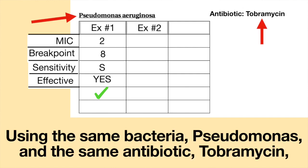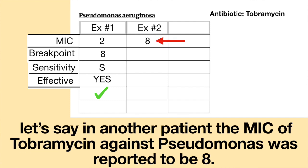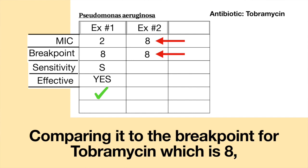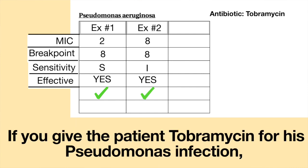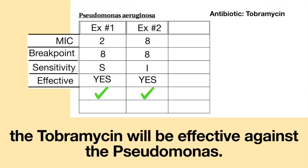Example number two: using the same bacteria, Pseudomonas, and the same antibiotic, Tobramycin — in another patient, the MIC of Tobramycin against Pseudomonas was reported to be eight. Comparing it to the breakpoint for Tobramycin, which is eight, the MIC would be reported as intermediate. This means that the MIC is at the same level as the breakpoint. If you give the patient Tobramycin for a Pseudomonas infection, the Tobramycin will be effective against the Pseudomonas.